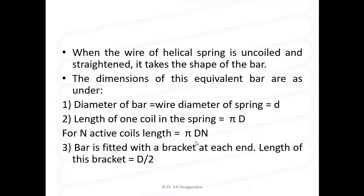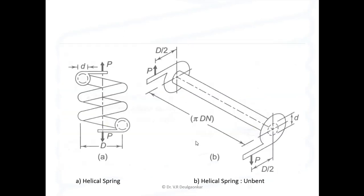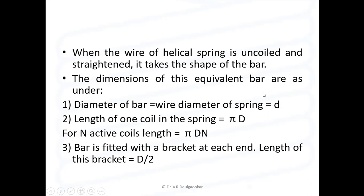When the wire of a helical spring is uncoiled, it takes the form of a bar. The length of this uncoiled spring (bar) is pi D into n. The length of one coil is pi D, so for n active coils the total length is pi D n. The bar is fitted with a bracket at each end, and the length of this bracket is capital D by 2.